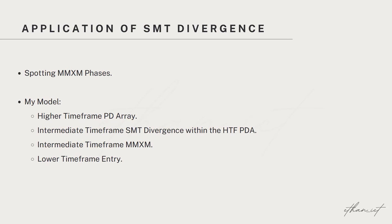Now that you understand what SMT is, this is how I personally like to apply it. The first thing is to use SMT divergences to spot phases of market maker models, and within these phases is where my model resides. When looking for SMT divergence, I am always looking for them to occur within a higher time frame key level. This is also where I've seen the occurrence of stacked SMT divergence, which I haven't heard anyone else talk about, so in a future lecture I'll cover this.